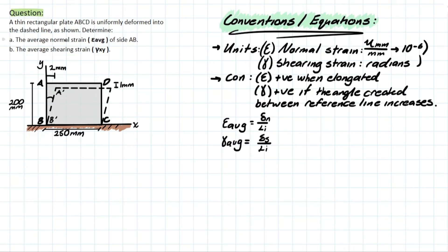So let's start with A. It's asking us for the normal strain epsilon average of side AB. So we have the initial length of side AB, but we are concerned with A'B', which is the final length of the side. So we know L initial is 200 mil. And L final is currently unknown because we need to determine what that length is.